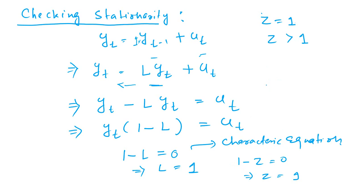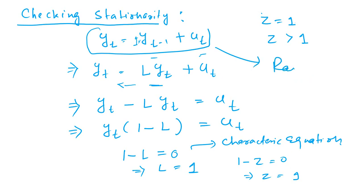Since z equals 1, it is a non-stationary series. For stationarity, all roots of the characteristic equation should be greater than 1. There is only one root here, z equals 1, and that is not greater than 1, so this is non-stationary. This time series specification is commonly known as the random walk, where the coefficient phi takes a value of 1. Random walk models are always non-stationary.